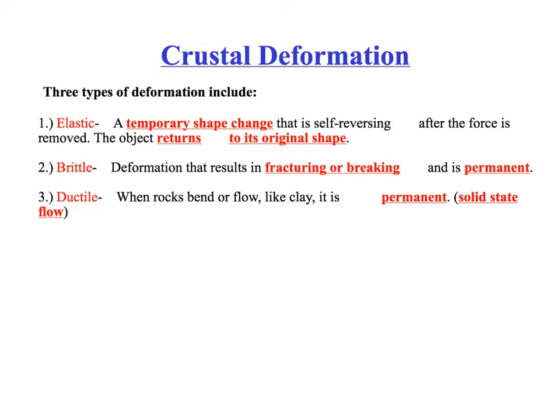Ductile deformation is typically when the rocks bend or flow, and we typically refer to ductile deformation as solid-state flow. Think of chewing gum — if you had a wad of chewing gum and you stretched it and just let it dangle in the air, it would not return to its original form.